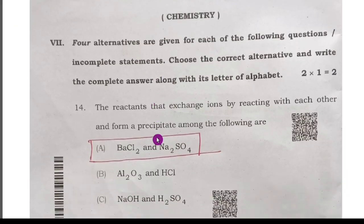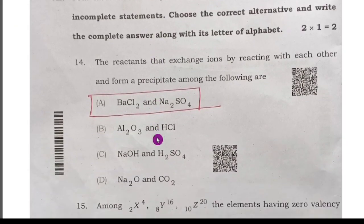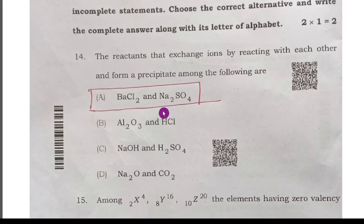Next now, chemistry is going to be asked. First, 14th question: the reactants that exchange ions by reacting with each other and form a precipitate among the following is barium chloride and sodium sulfate. Option is the right answer.